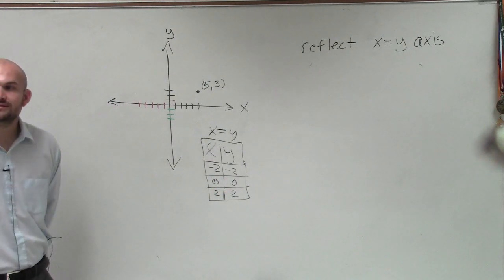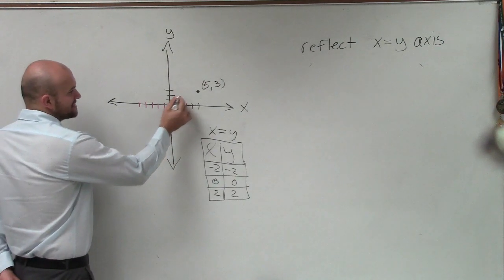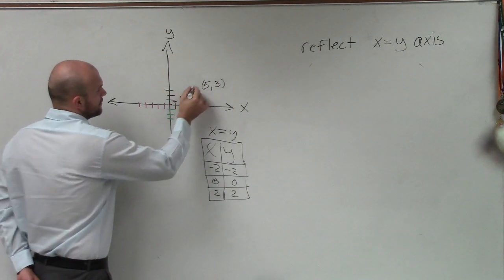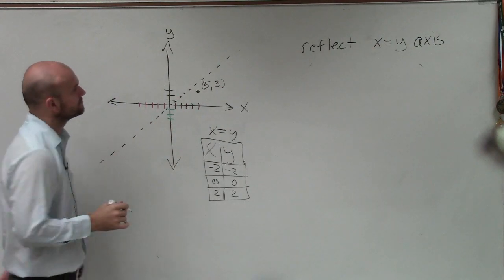So it's the exact same points. So the y equals x-axis, ladies and gentlemen, are the exact same x and y-coordinates. And it looks like this. It's this nice little dotted line.